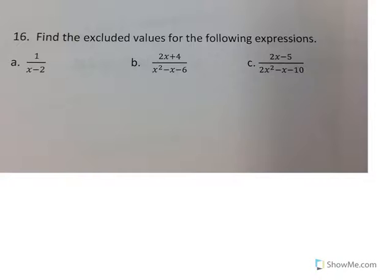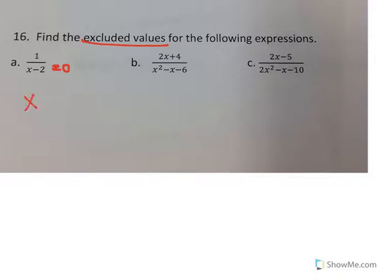Number 16: find the excluded values for the following expressions. For excluded values, the values that are excluded will be whatever makes the bottom of the fraction equal to 0. So in the case of problem A, the bottom cannot equal 0 — and when it is equal to 0 is when it's going to be excluded.